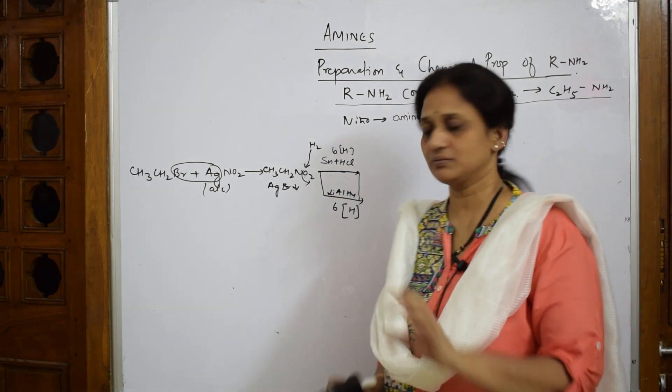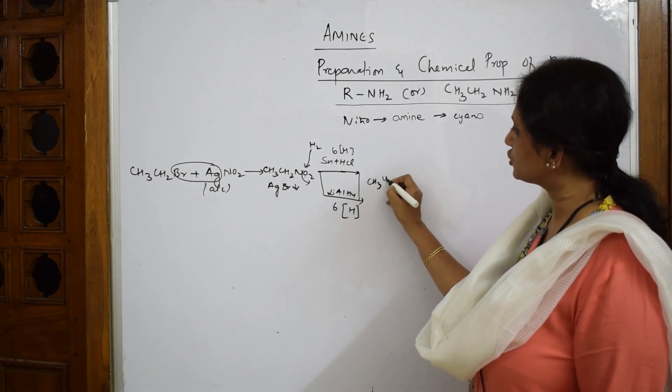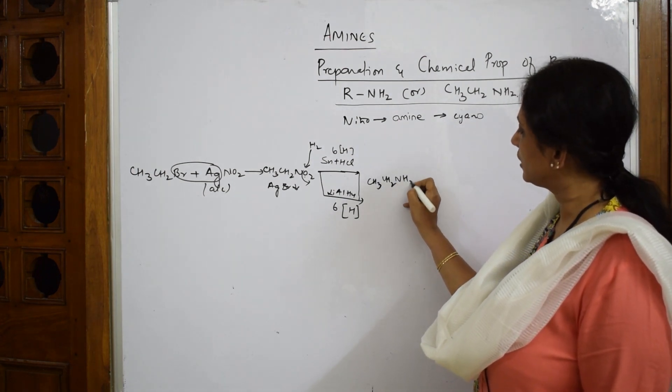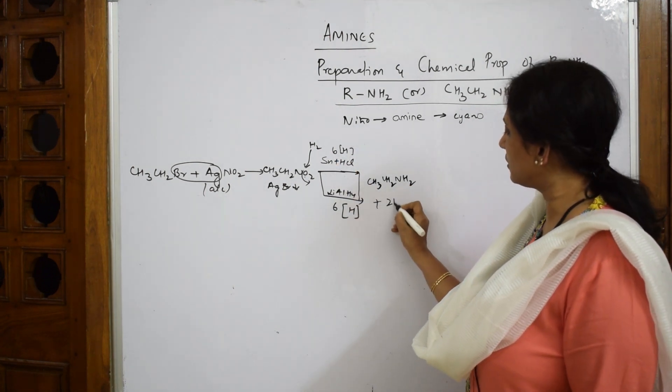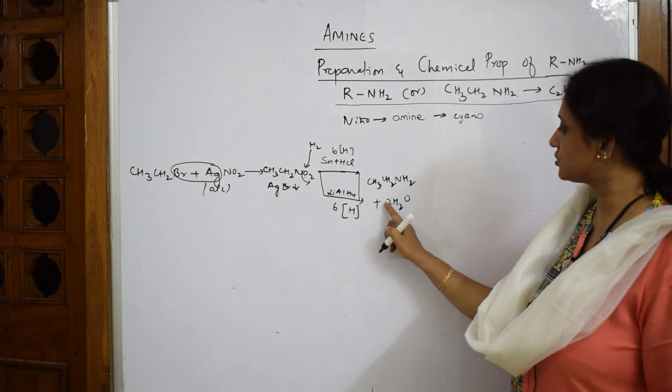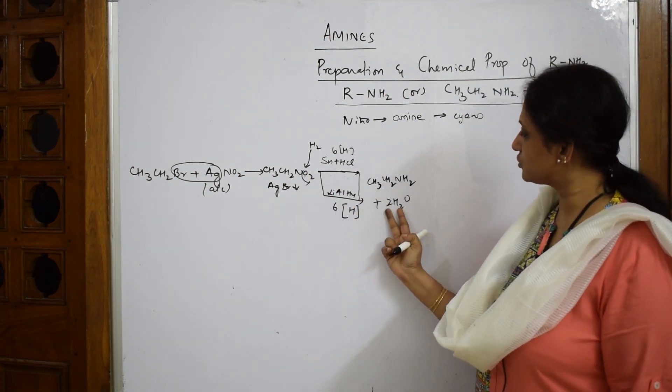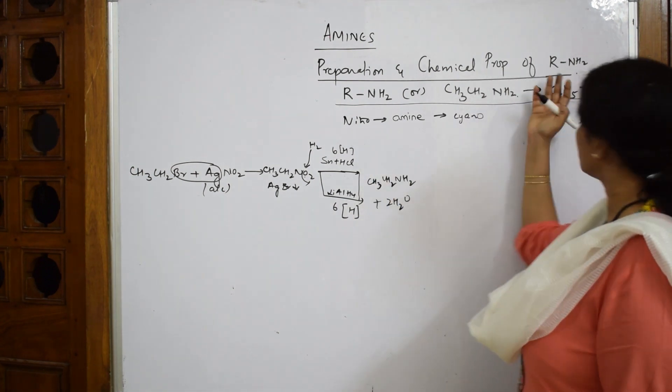Both will give the same product. If you see these two agents in the paper, the examiner wants you to add hydrogen as reducing agents. Now CH3CH2NH2 - two hydrogens have gone, still I have four. Four will become two water molecules with this oxygen. Oxygen is two, two hydrogen is four, four plus two is six. Now I prepared primary amine. This is your preparation.